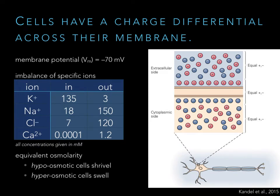Ions will move across the membrane because every neuron or cell has what we call a membrane potential — that's just the charge at the membrane, and for your textbook neuron it's going to be minus 70 millivolts. This is due to the imbalance of ions on both sides of the membrane. We can see a table showing this imbalance: potassium (K+) has a higher concentration inside than out, while sodium, chloride, and calcium are higher outside than in.